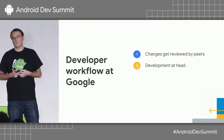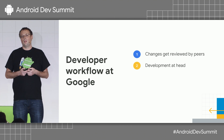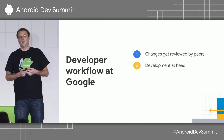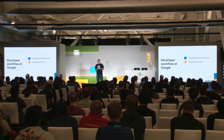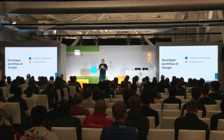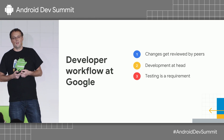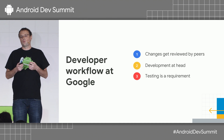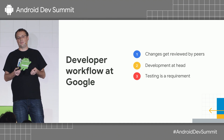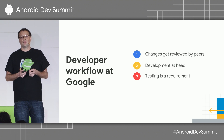Another important thing is that all development happens at head, and everything is built from source. We have a large monorepo which allows us to easily search for code, reuse code, and also keep the repo healthy by sending large-scale changes. We also have a very strong testing culture. At Google, if you have a change, you have to have tests, and all of those tests have to pass before you submit your change.